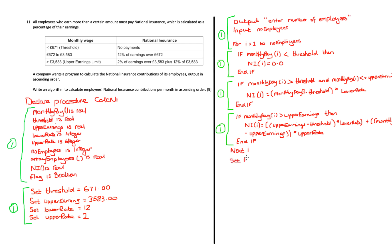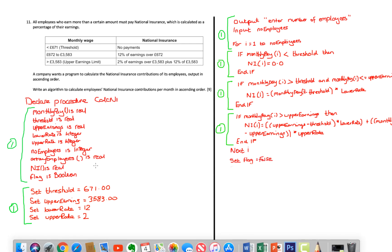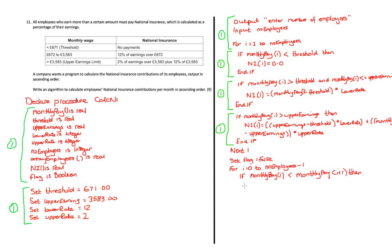For the bubble sort, I set my flag variable to false since it's a boolean. I create a for loop iterating through all employees. I check if `monthly_pay[i]` is less than `monthly_pay[i+1]` and make a swap. Note: after reviewing, the less-than symbol should actually be greater-than for ascending order — we want lower values on the left and greater values on the right.